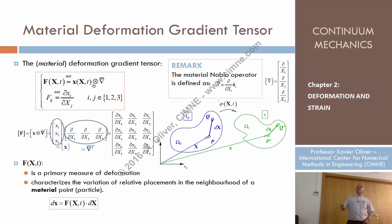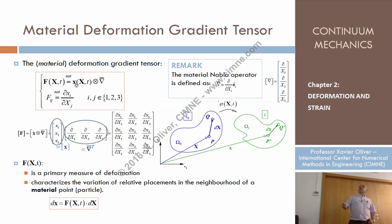It is a symbolic product of the spatial coordinates vector — the equations of motion — times the nabla operator. That gives xi differentiated with respect to capital XJ.